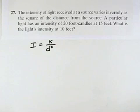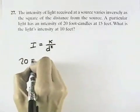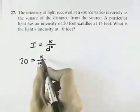And then we're told a particular light has an intensity, I, of 20 foot-candles at 15 feet, so K over 15 squared. This will allow us to solve for K.